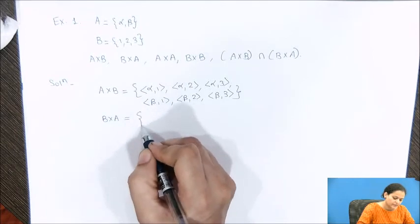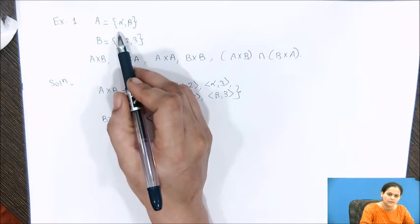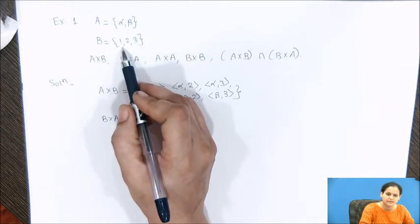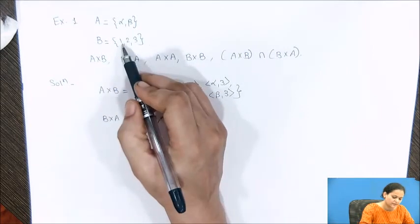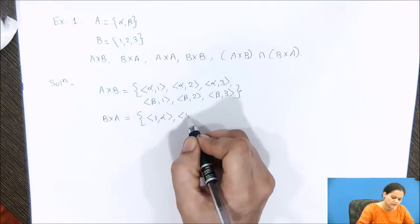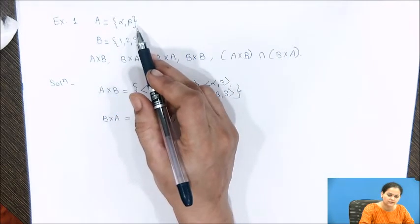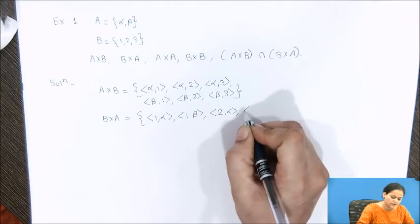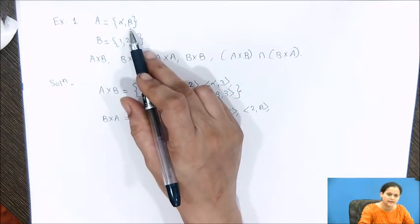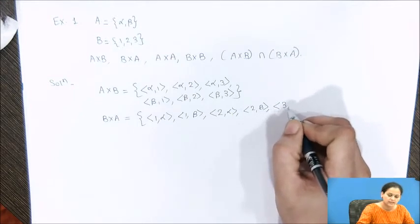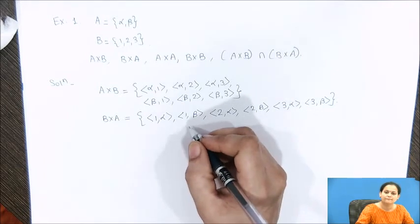Similarly, we will find B×A. See the order now — we take the first element in the ordered pair from set B and the second element from set A. Starting with element 1 from B, we get (1,α) and (1,β). Next, combining element 2 from B with each of α and β gives (2,α) and (2,β). Similarly, element 3 from B combined with α and β gives (3,α) and (3,β). So this is the answer for B×A.